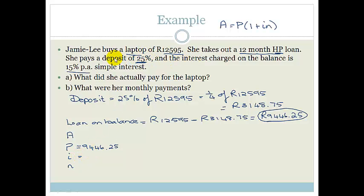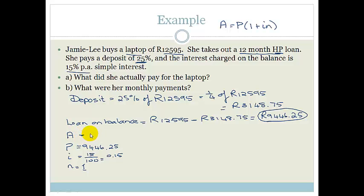The interest was 15% per annum, so I equals 15 over 100 which equals 0.15. She took out a 12-month loan, and since the rate is per annum, 12 months equals one year, so N equals 1. Now we can substitute into A equals P times bracket 1 plus IN, giving us A equals 9,446.25 times bracket 1 plus 0.15 times 1.